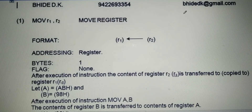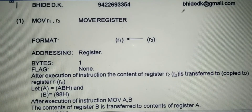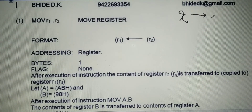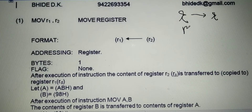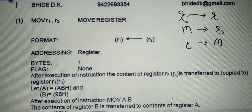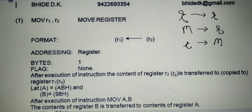We have to study how data can be transferred. Data can be transferred from any one general purpose register to any other general purpose register, from any memory location to any general purpose register, or from any general purpose register to any memory location — that is, register to register, memory to register, or register to memory.